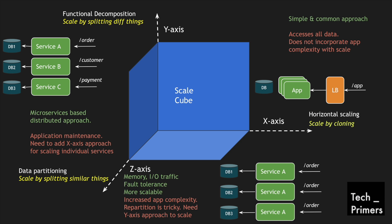The final approach is data partitioning. You take an individual function from the y-axis — take the order example — and split it into multiple data sets. An individual database table can be split into multiple data sets based on a category such as geographical location or names, depending on frequency and data usage patterns. This way you scale by splitting similar things, individually scaling services that share the same code base but have completely different data. Using a mix of all three approaches creates a much more scalable distributed system.